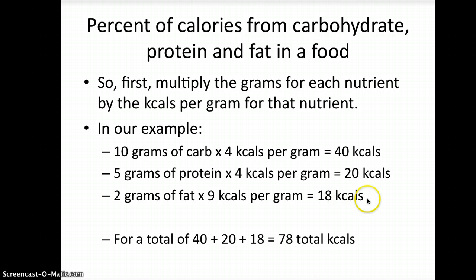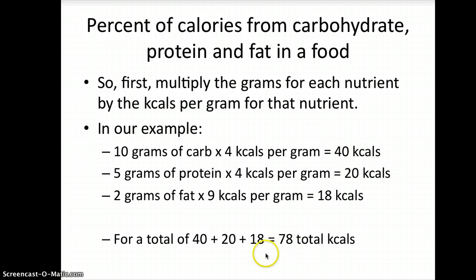Now, these are all the calories from the different nutrients. You add them up to get the total calories. So 40 plus 20 plus 18 equals 78 total calories.